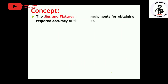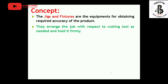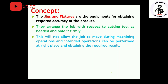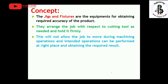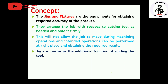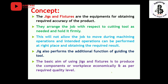The concept of jigs and fixtures: jigs and fixtures are equipment used for obtaining the required accuracy of products. They arrange the job with respect to the cutting tool as needed and hold it firmly. This does not allow the job to move during machining operations, and the intended operations can be performed at the right place, obtaining the required results. Jigs also perform the additional function of guiding the cutting tools. The basic aim is to produce components or work pieces economically and to the required quality level.